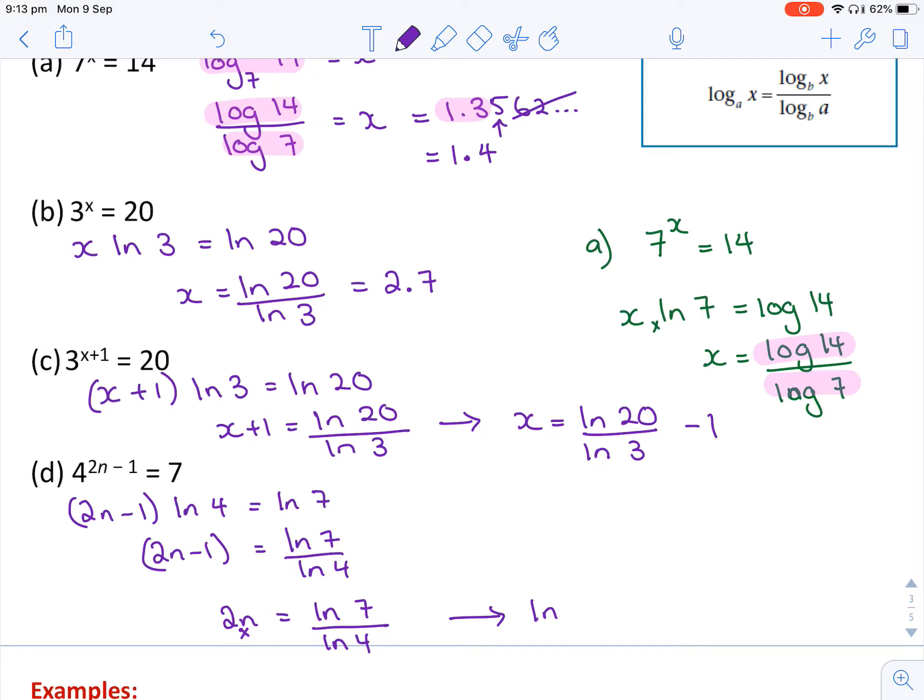So you end up with n equals log 7 over log 4, and all of this is divided by 2. And you should get something like 1.2, I believe.